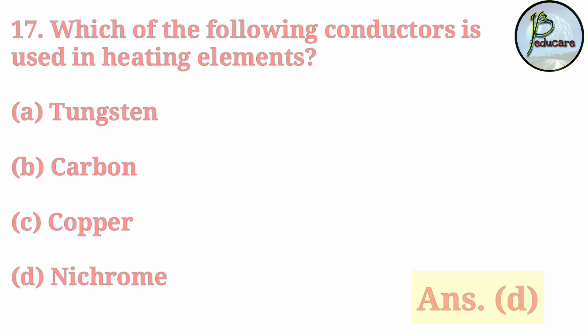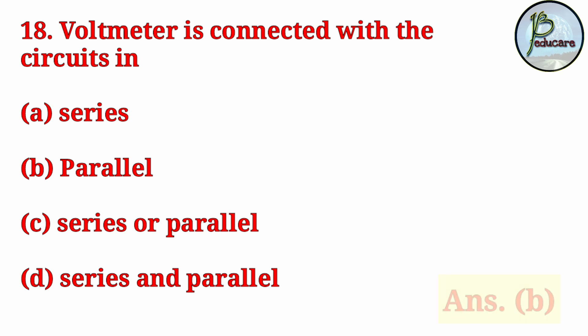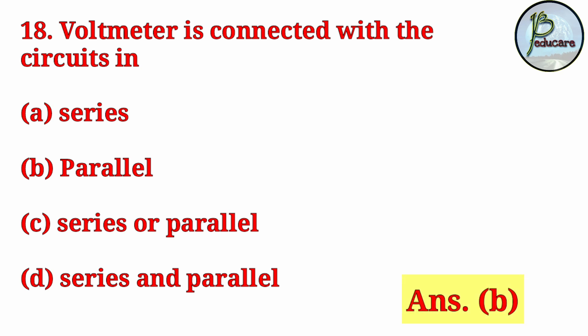Next question: Voltmeter is connected with circuits in which configuration? An ammeter is connected in series. A voltmeter is connected in parallel. So the correct answer is B, parallel.